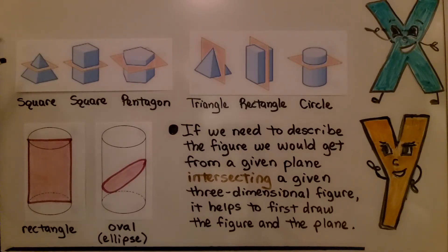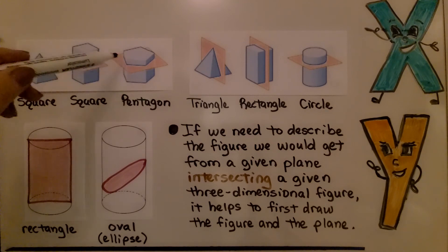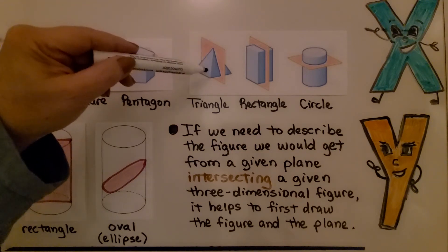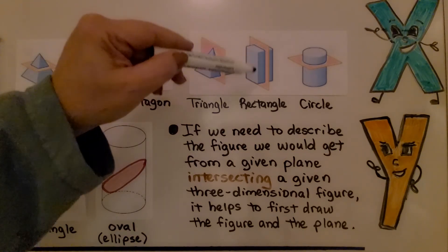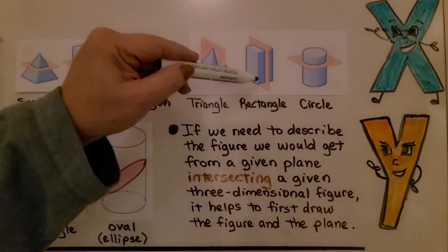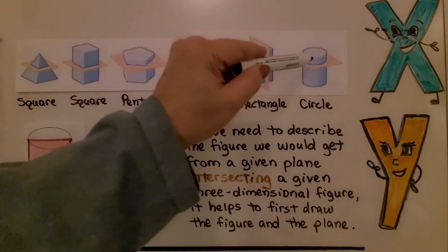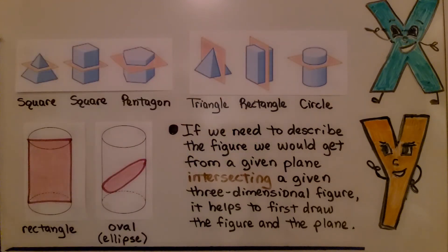This square pyramid has a plane horizontally and it's making a square cross section. This rectangular prism is making a square cross section. And this pentagonal prism is making a pentagon shaped cross section. This pyramid is making a triangle shaped cross section. This rectangular prism is making a rectangular or rectangle shaped cross section. And here we'll have a circle as our cross section.